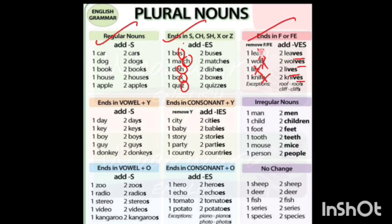If the words end with 'f' or 'fe', remove those letters. If you see 'f', remove that 'f' and write 'v' + 'es'. Remove 'fe' and write 'v' + 'es'. Remove 'f', 'e' and write 'v', 'es' — instead of those letters.